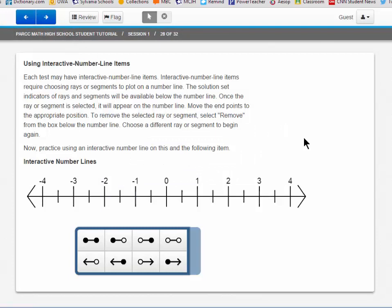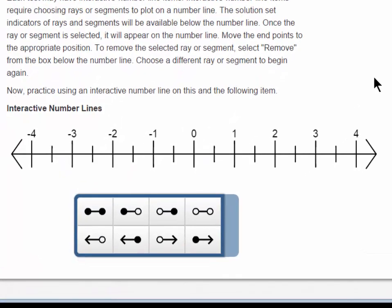Moving on to slide 28 will take us to using interactive number line items. Each test may have interactive number line items. These items require choosing rays or segments to plot on a number line. The solution set indicators of rays and segments will be available below the number line. Once the ray or segment is selected, it will appear on the number line, and you can simply move the endpoints to the appropriate position.